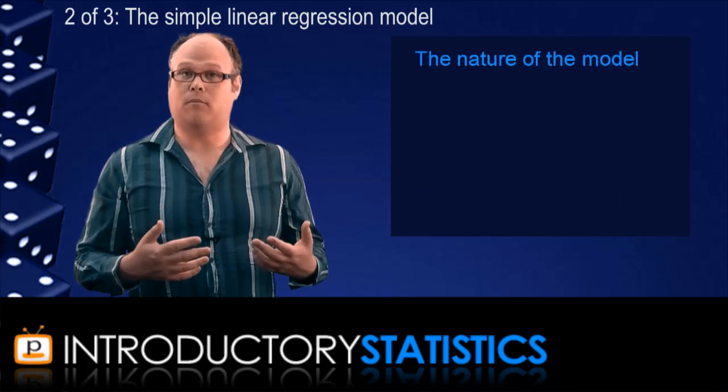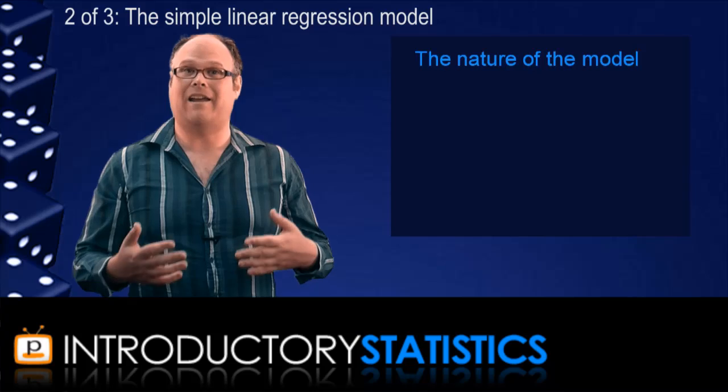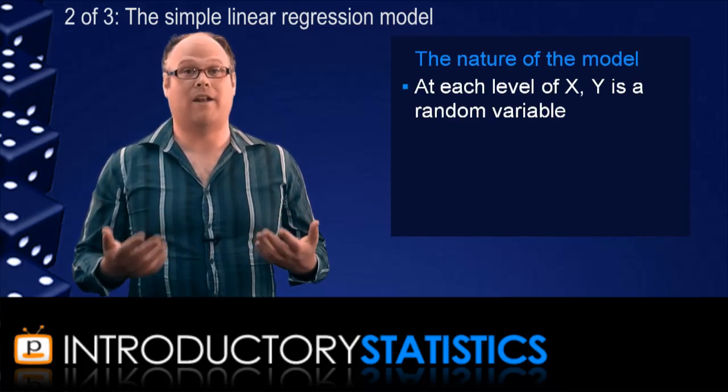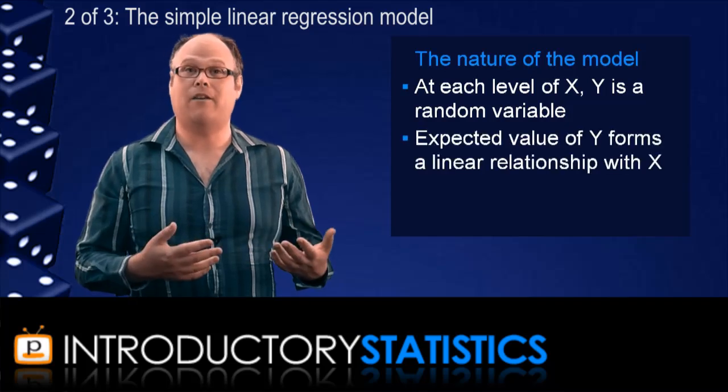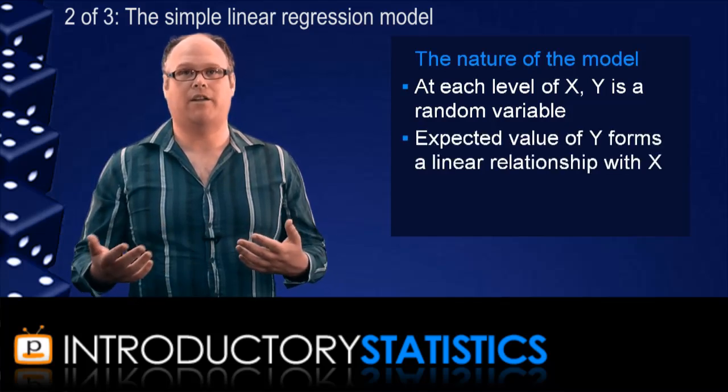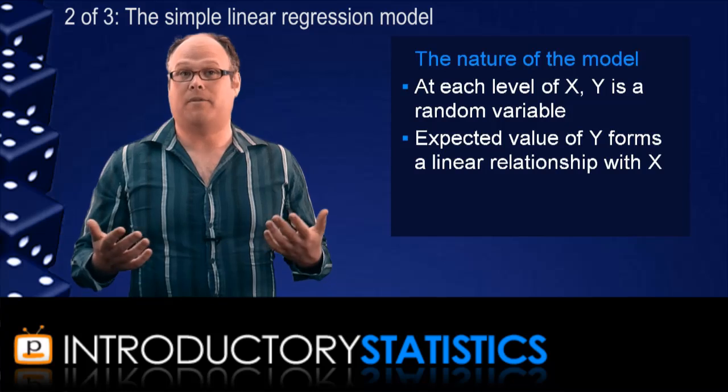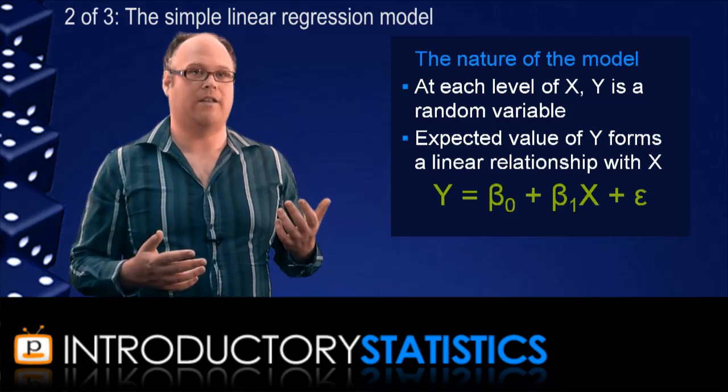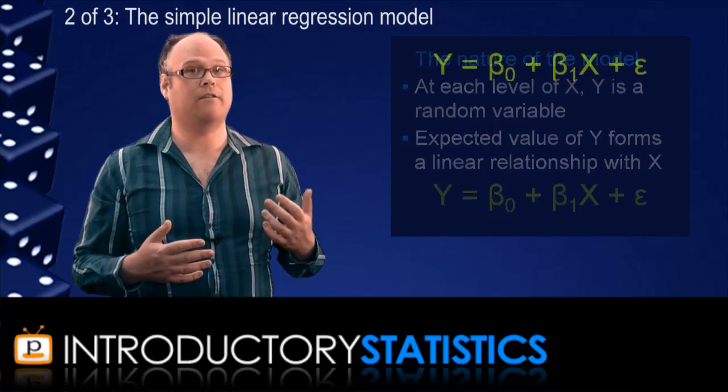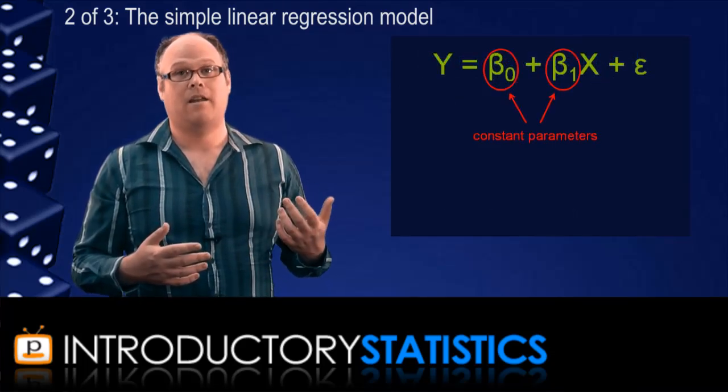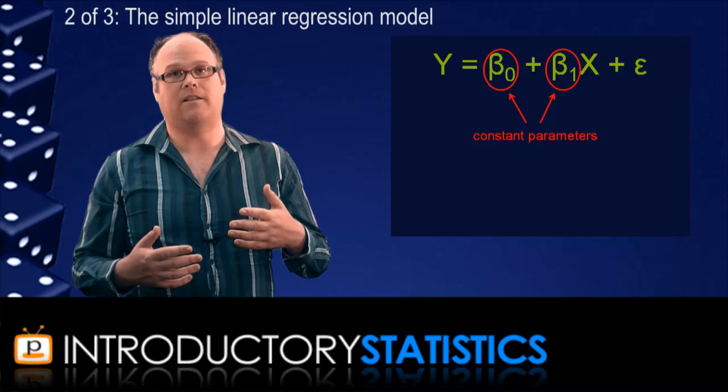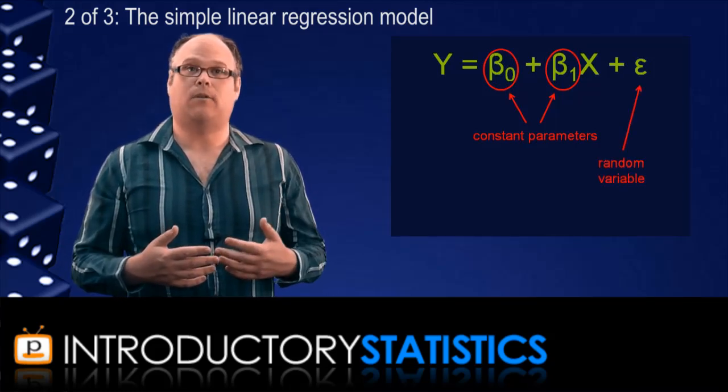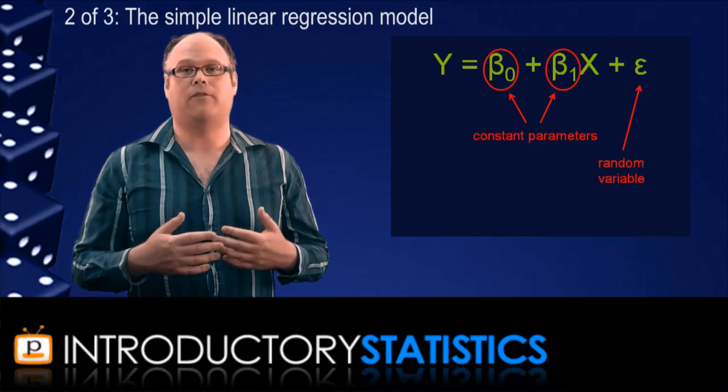Technically speaking, the regression model is based on the idea that at each level of the explanatory variable x, the response variable y is a random variable and the expected value of y will follow a linear relationship with x. The best way to represent this idea is to say that y and x exist in a relationship like the one presented here. In that equation, β₀ and β₁ are constants. In fact, they're parameters that correspond to the sample statistics b₀ and b₁. But the ε is a random variable and that's what allows y to vary about the regression line.